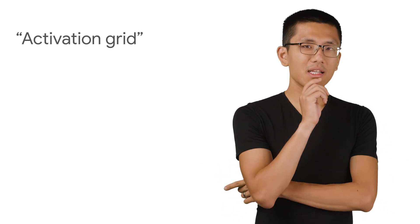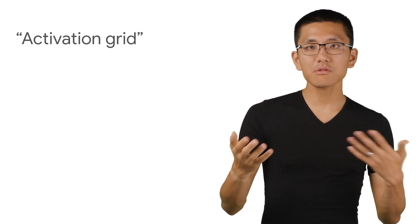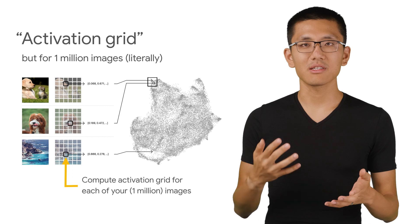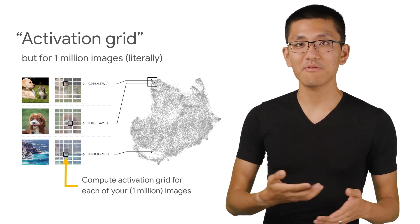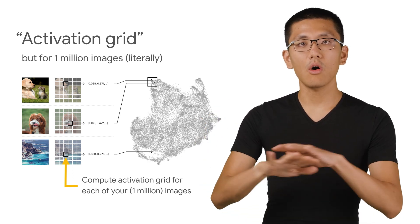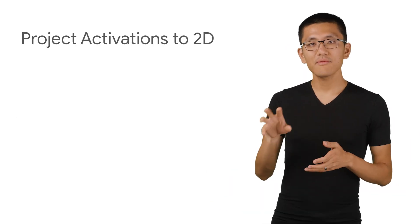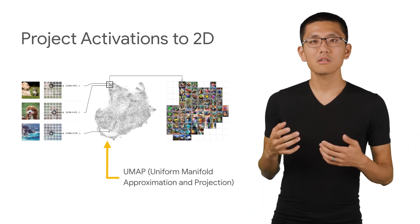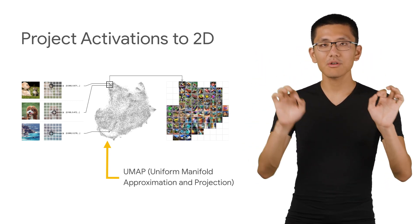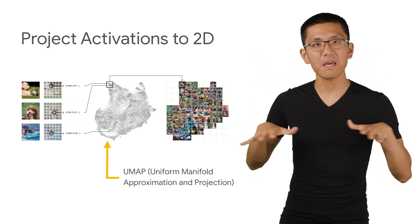Activation grids tell us about some of the activations of the neural network for a specific image. But what about all the other activations of the network? How might we understand the other types of activations? Well, we'd need to feed in lots of example images of all sorts of types. So what if we did that? We could run lots of images. In fact, we could run a million different example images through the network and record all of their activation grids. All these individual activations correspond to some kind of higher dimensional location in the neural network's activation space, so to speak.